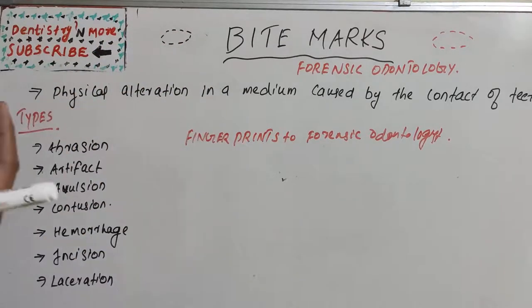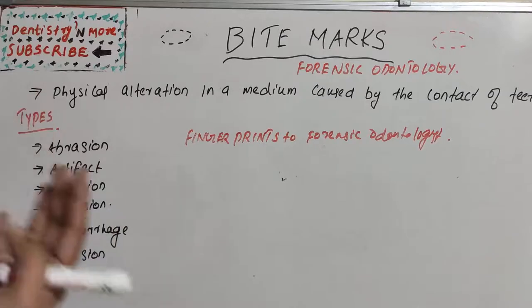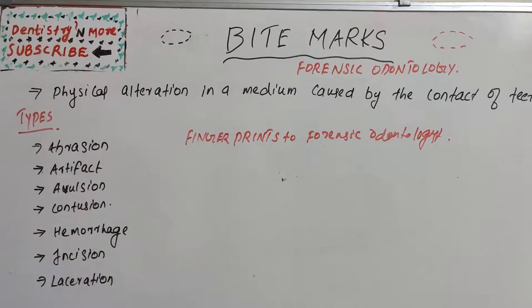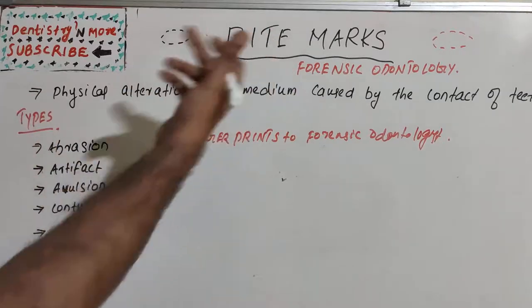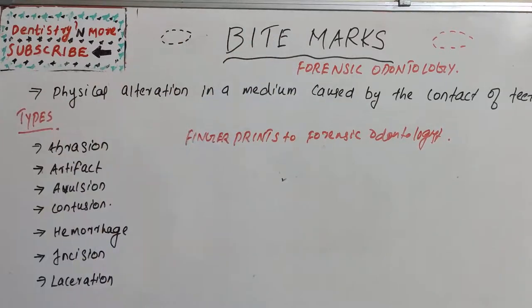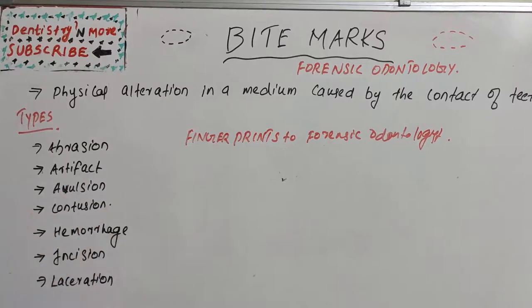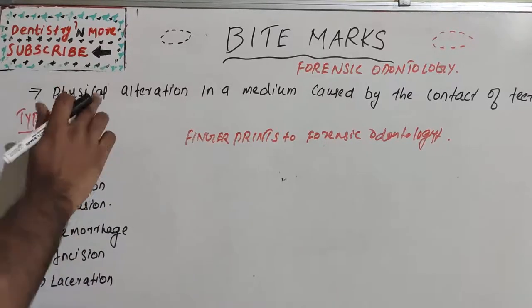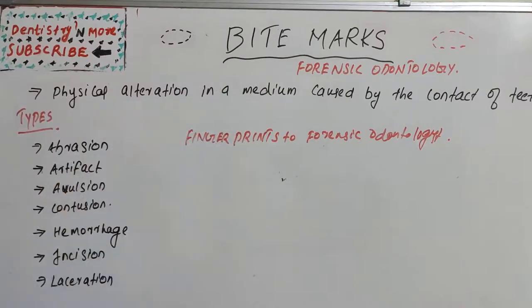When a teeth pattern is left behind at a crime scene or in other situations, that pattern will be replicated using a cast, photographs, or other methods, and will be utilized for identification of the person or to reach a conclusion about what the incident was. It is, essentially, a physical alteration in a medium caused by the contact of teeth.